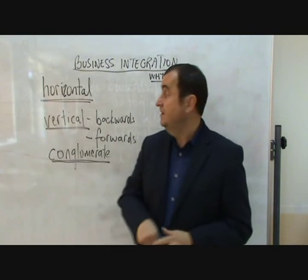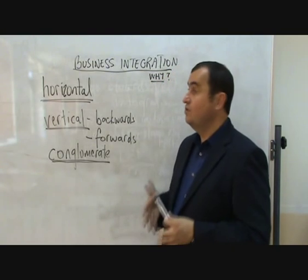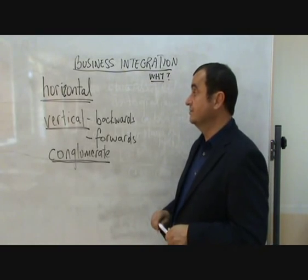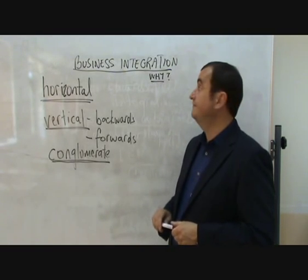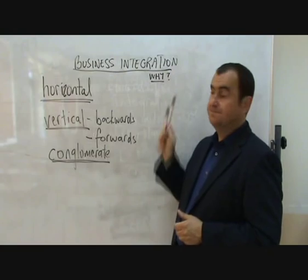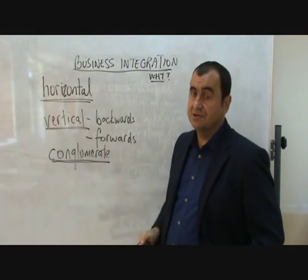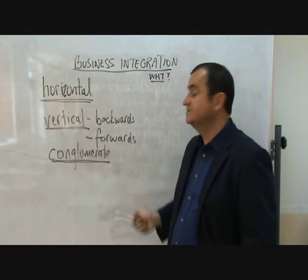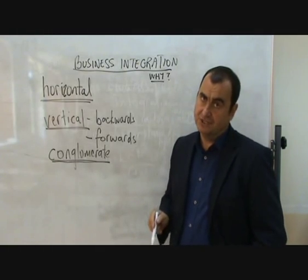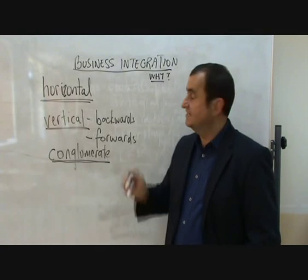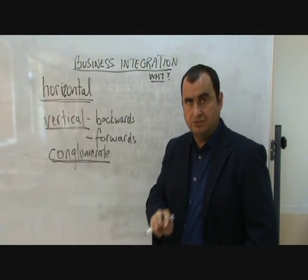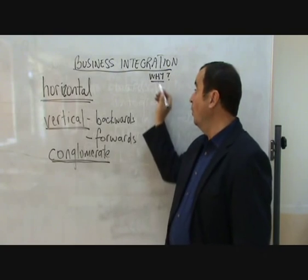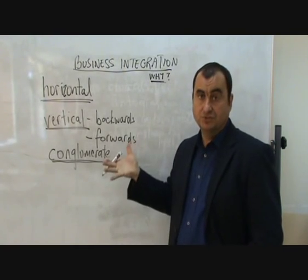Let's identify four kinds of external business growth, which are four kinds of integration: horizontal integration, vertical backwards, vertical forwards, and conglomerate integration. As I go through each of these I want to explain it, give you an example, and then focus on why businesses would do this.